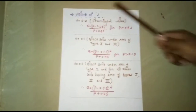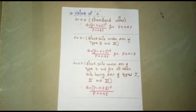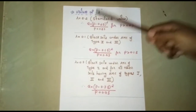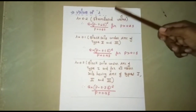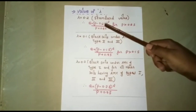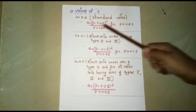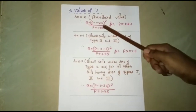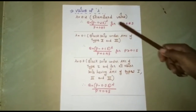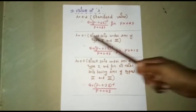Next is the value of lambda. Lambda is 0.2 under standard conditions. Substituting into the main equation, we get Q equals P minus 0.2S, the whole squared, divided by P plus 0.8S, for P greater than lambda S.